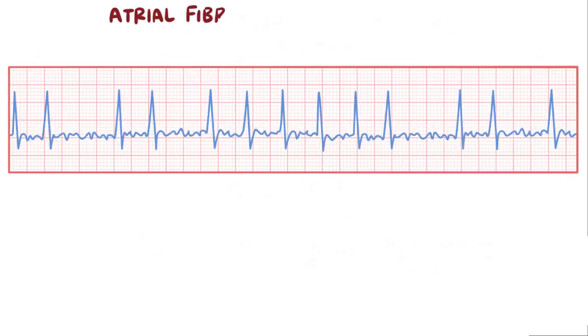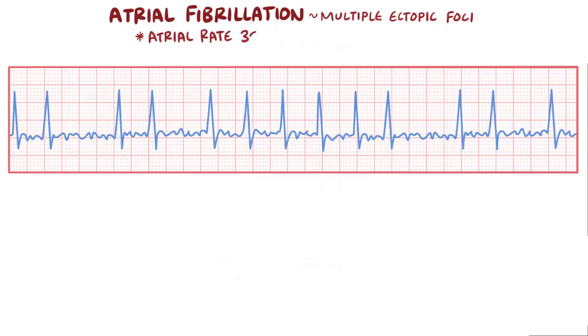Another situation is atrial fibrillation, which is when there are multiple ectopic foci in the atria that start firing all at once. The atrial rate here can increase to 350 to 450 beats per minute. In this situation, only the occasional firing of an ectopic focus that happens to be near the AV node is able to make it through and down to the ventricles.